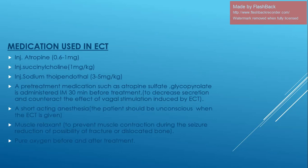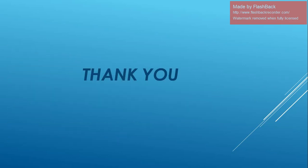Medications used in ECT: Atropine 0.6 mg to 1 mg, succinylcholine 1 mg per kg, sodium thiopental 3 to 5 mg per kg. Pre-treatment medication such as atropine sulfate or glycopyrrolate is administered 30 minutes before treatment to decrease secretions and counter the effect of vagal stimulation induced by ECT. A short-acting anesthetic ensures the patient is unconscious when ECT is given. Muscle relaxation helps prevent muscle contractions during seizure, reducing the possibility of fractures or bone dislocation. Pure oxygen is given before and after treatment.